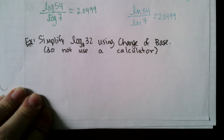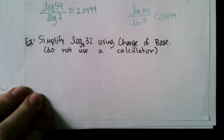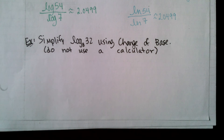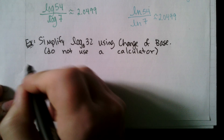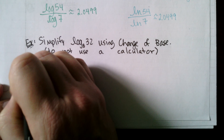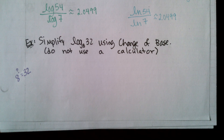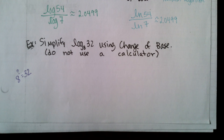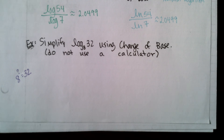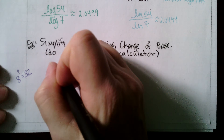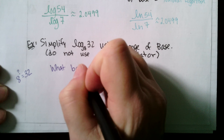We're going to simplify log base 8 of 32 using change of base without a calculator. This log asks: 8 to what power gives me 32? If I knew the answer I'd just say it — like log base 8 of 64 is 2 — but for log base 8 of 32, the 8 and 32 remind me of each other as compatible numbers.